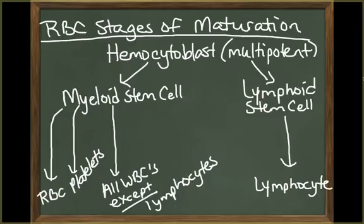Red blood cells pass through several stages as they mature. It starts off as a stem cell in the red bone marrow called a hemocytoblast, which is a multipotent stem cell. A multipotent stem cell has the ability to differentiate into several different cells. The hemocytoblasts will differentiate into myeloid stem cells and lymphoid stem cells.